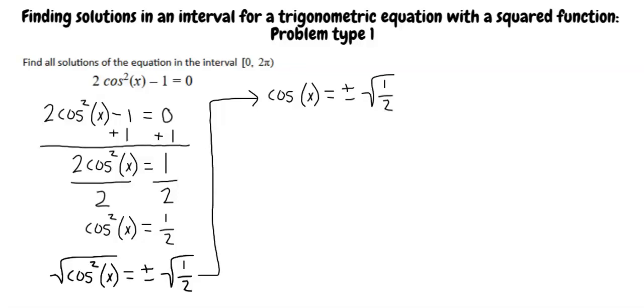Using the quotient property of radicals, we know that plus or minus square root of 1 half is equal to plus or minus square root of 1 over square root of 2. The square root of 1 is equal to 1. So, we write plus or minus 1 over square root of 2.